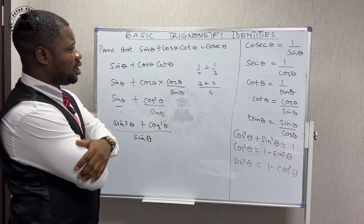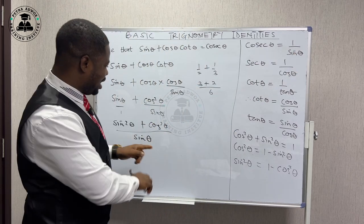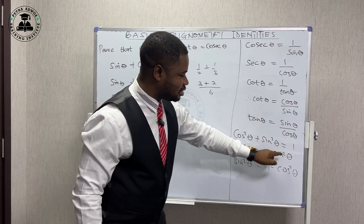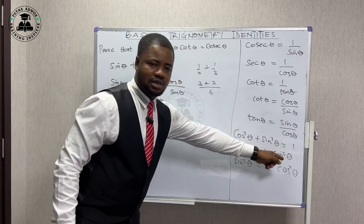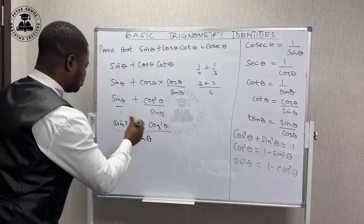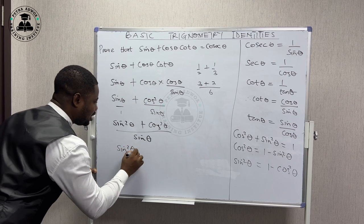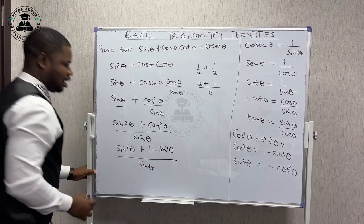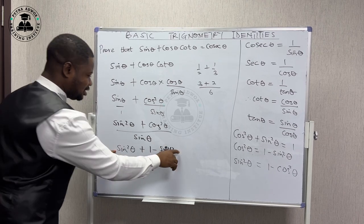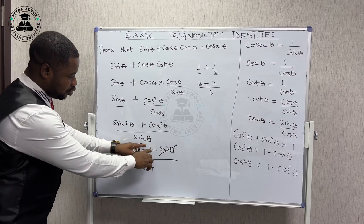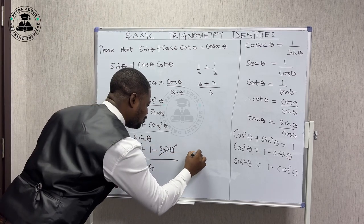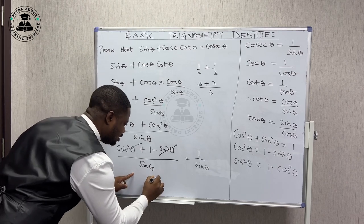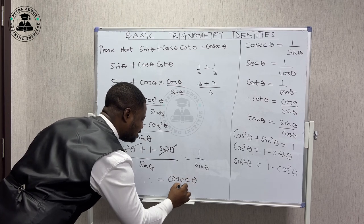We only want to be left with one over sine theta — that is cosec. But we are having cos squared theta here. We know that cos squared theta equals one minus sine squared theta, so we substitute that in. We get sine squared theta plus one minus sine squared theta, all over sine theta. Now sine squared theta minus sine squared theta gives us zero, so we are left with only one over sine theta — which is cosec theta. Hence proved.